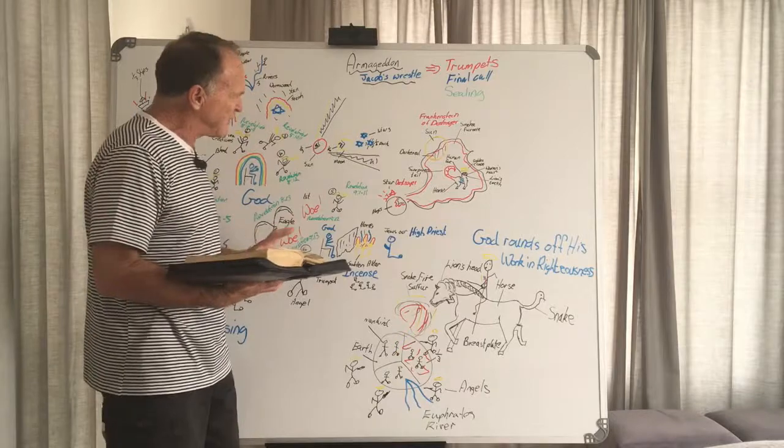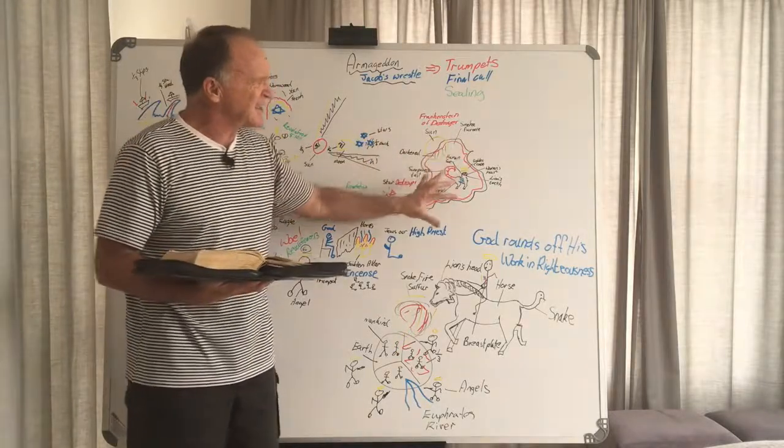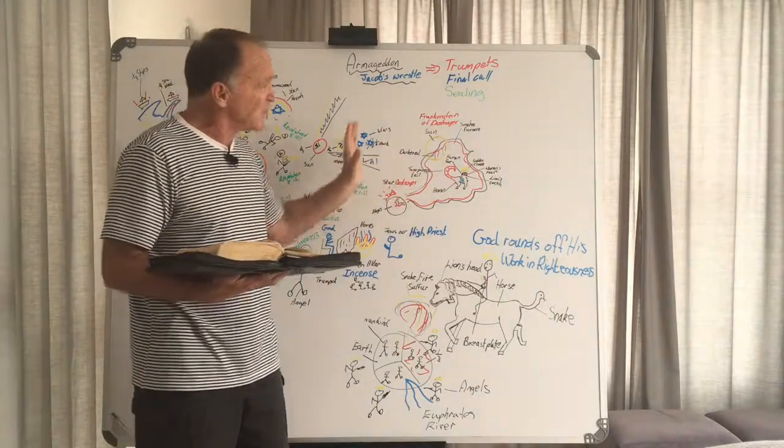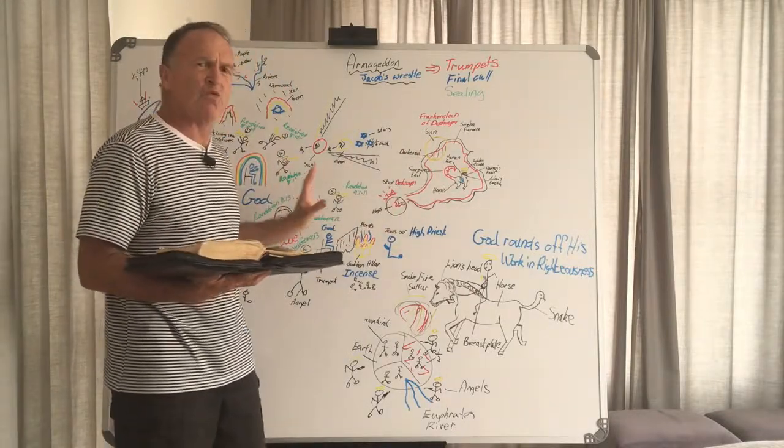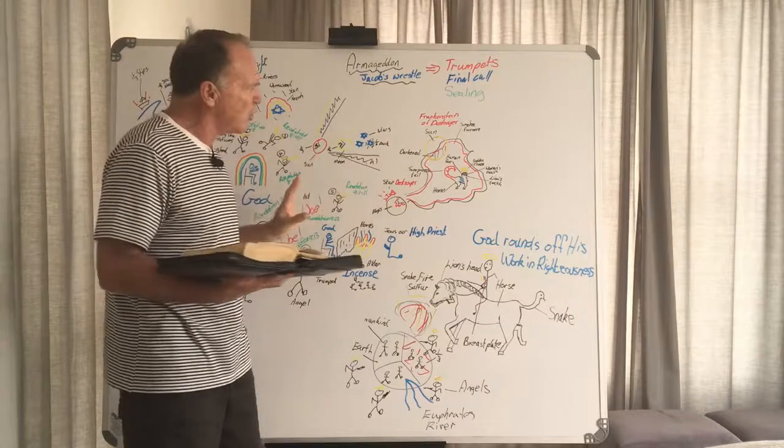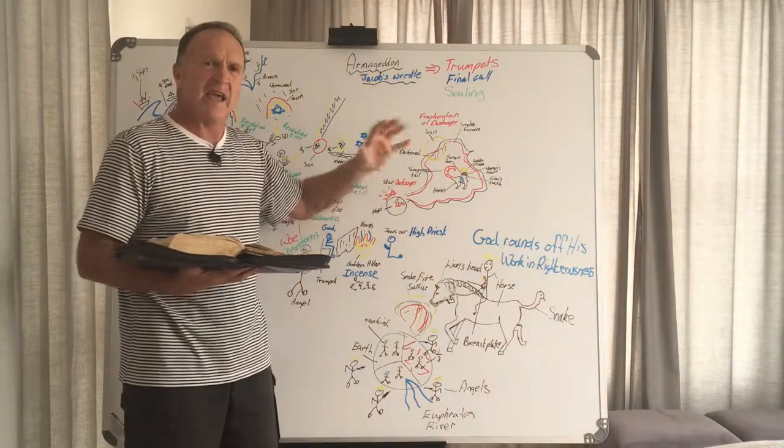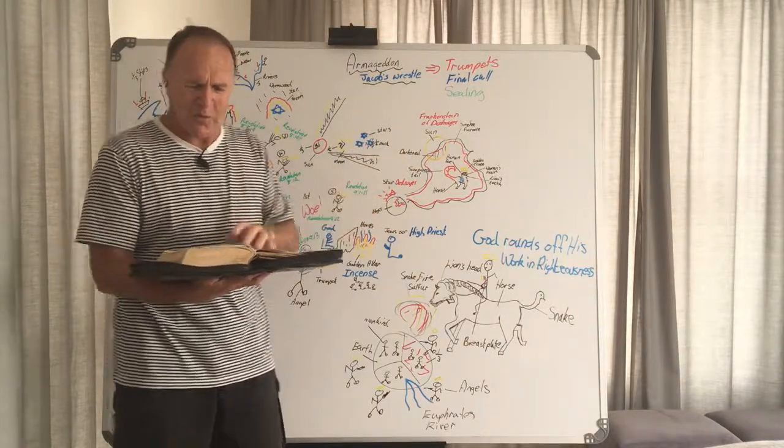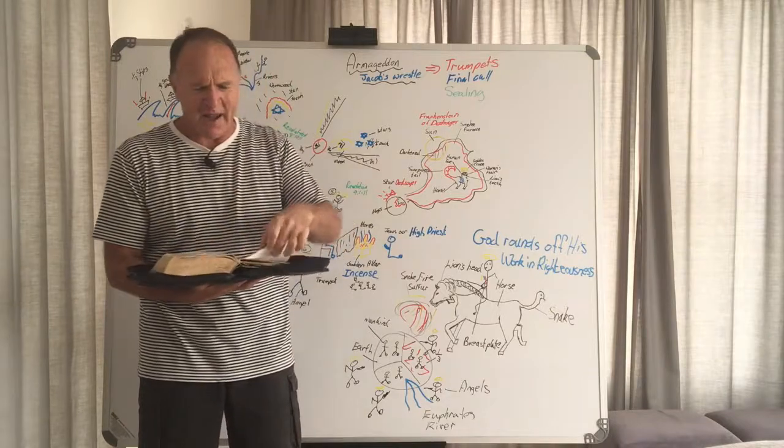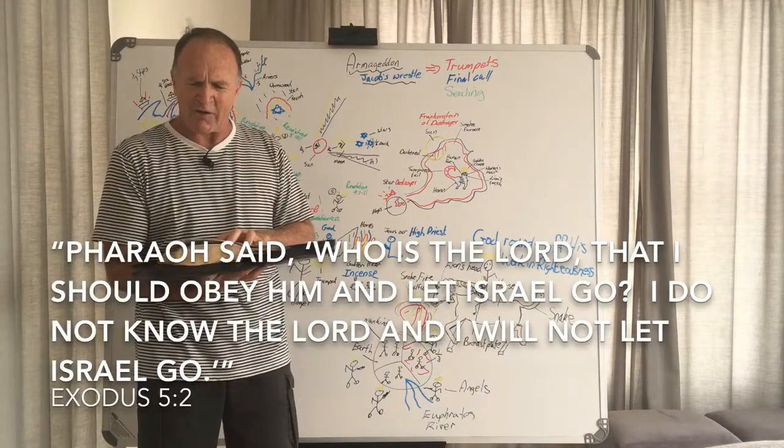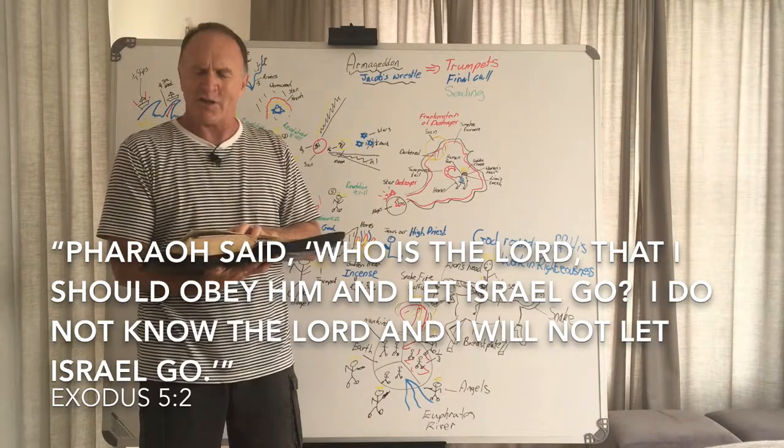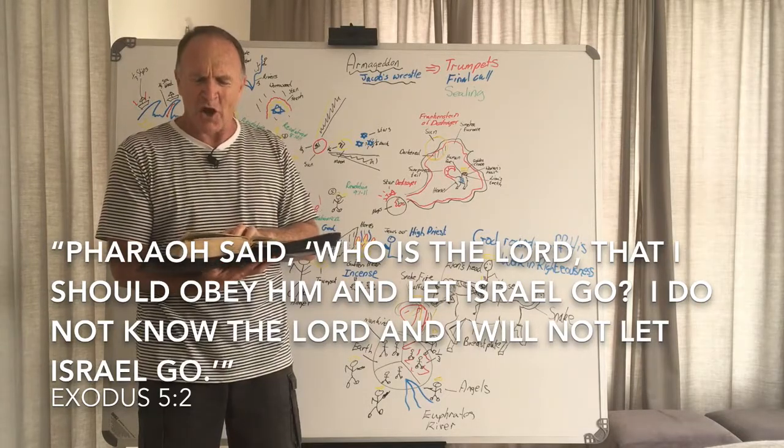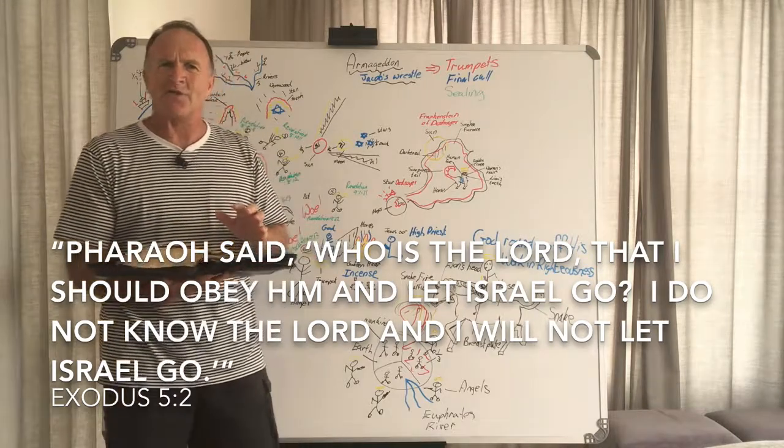What we've gathered from the study is that because of his display of power, but also because of his deceptiveness, the whole world is wandering after him. The whole world has acknowledged his authority. It's almost as if the people are crying out as we read in Exodus chapter five, who is the Lord that I should obey him and let Israel go? I do not know the Lord and I will not let Israel go.